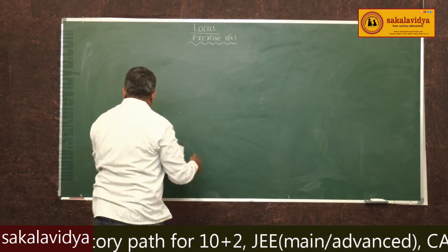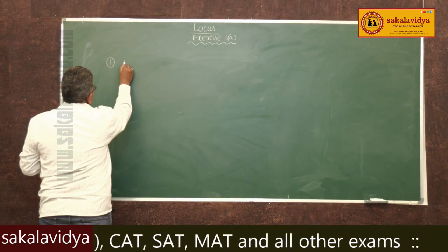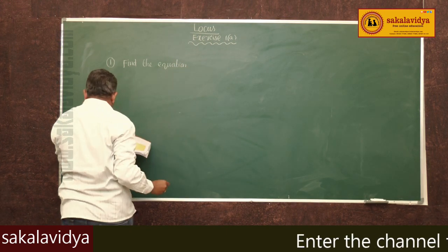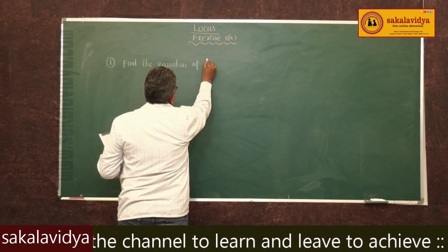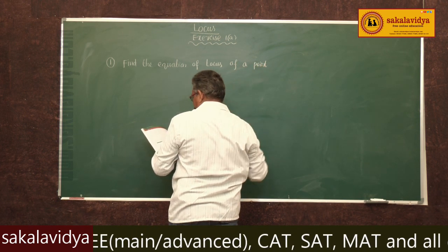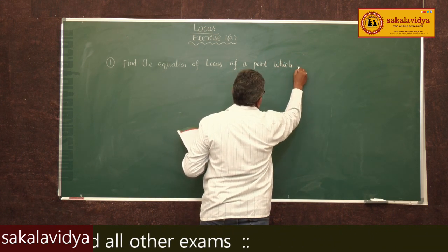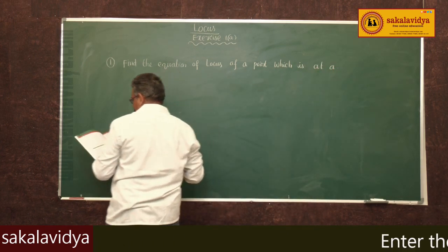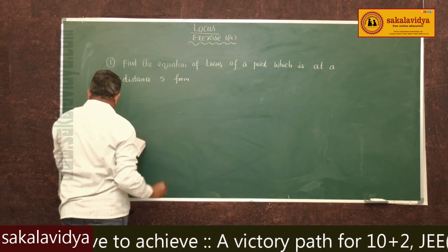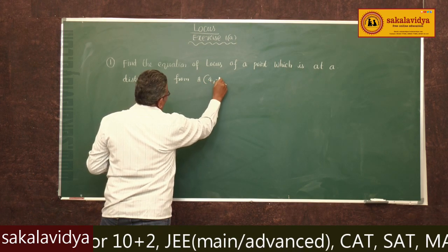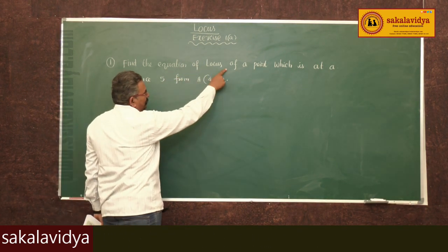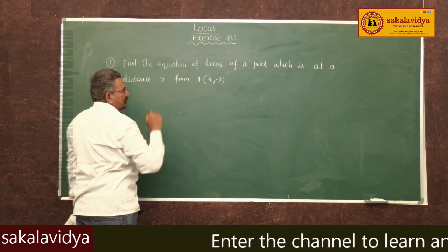First problem: find the equation of locus of a point which is at a distance 5 from A(4, -3).